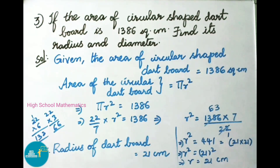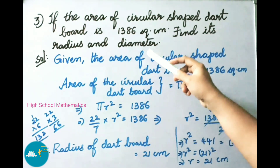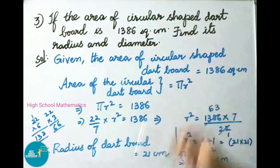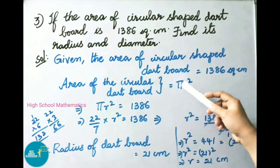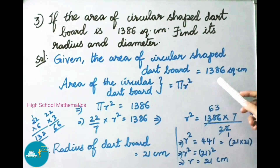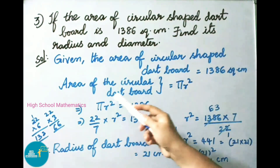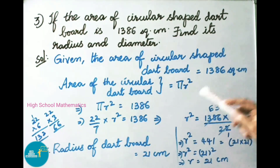See now question number 3. If the area of the circular shaped dart board is 1386 square cm, find its radius and diameter. Let us see the solution. Given: the area of the circular shaped dart board is 1386 square cm. We know the area of a circle is pi R squared. Since it is circular shaped, area of the circular dart board equals pi R squared, and we can equate them.